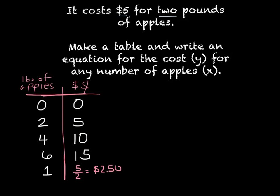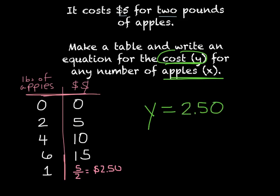The directions say to write an equation for the cost — how much it costs for any number of apples. I'm going to use Y for cost. To find cost, I know it's $2.50 per apple, so I'll write it as $2.50 times however many pounds of apples I buy, times X, because it's always $2.50 per apple.